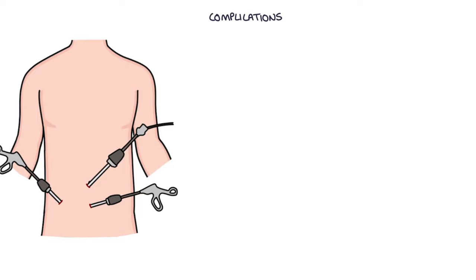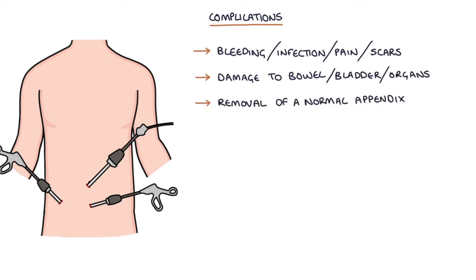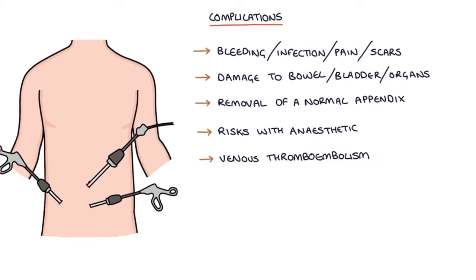There are a few complications to be aware of with an appendicectomy, and these include bleeding, infection, pain and scarring, damage to the bowel, bladder or other organs, removal of a normal appendix, the risks associated with the anaesthetic, and venous thromboembolism such as a deep vein thrombosis or a pulmonary embolism.